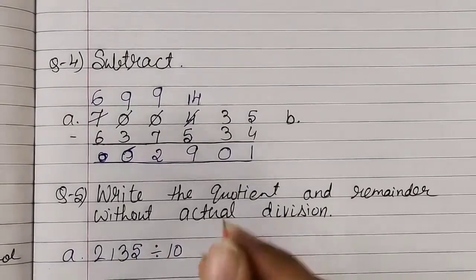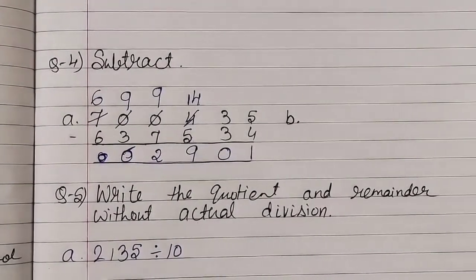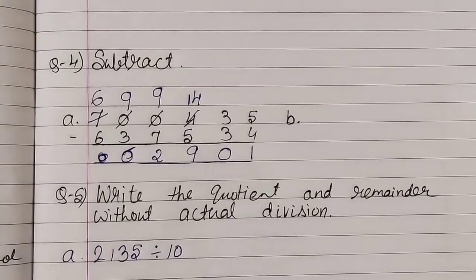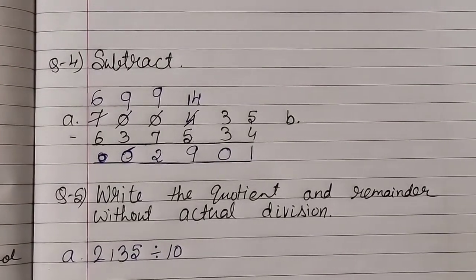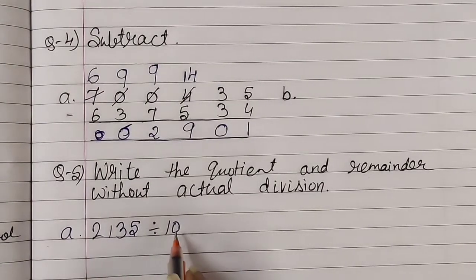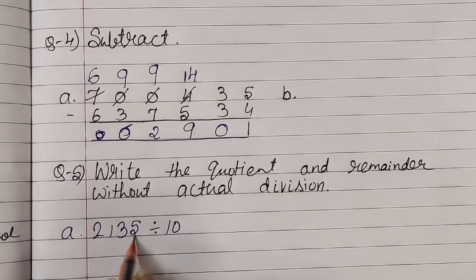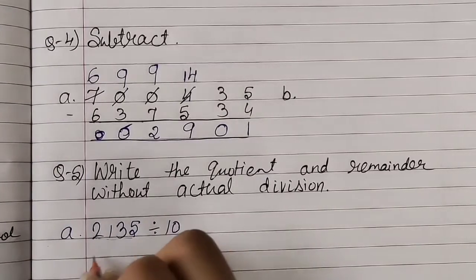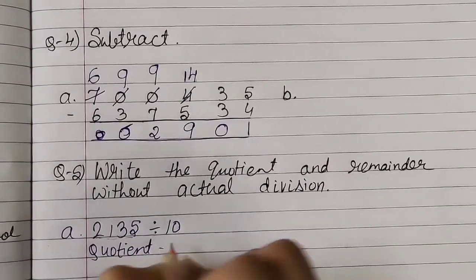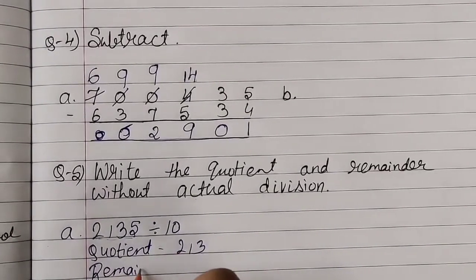Number (a): 2,135 divided by 10. When we divide any number by 10, the last digit becomes the remainder and the remaining digits form the quotient — because 10 has one zero. So the last one digit — which is 5 — is our remainder. The remaining digits — 213 — form our quotient. So quotient is 213 and remainder is 5.